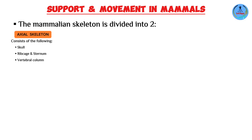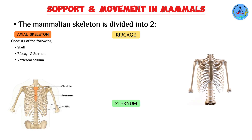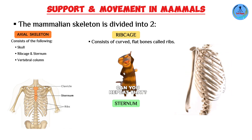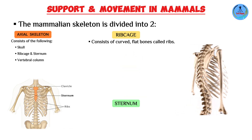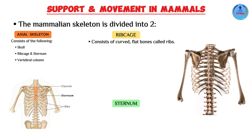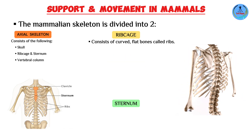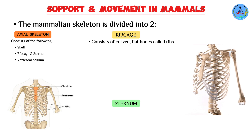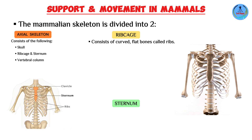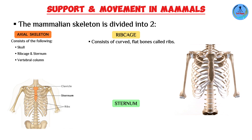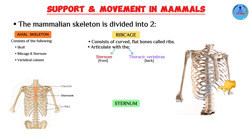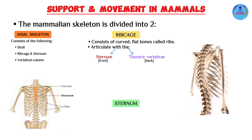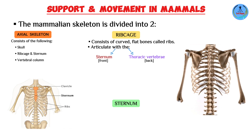Moving on to the next part of the axial skeleton — the rib cage and the sternum. In humans we have 12 pairs of ribs, totaling 24. Interestingly, some people are born with an extra rib or even with missing ribs without any health problems. The ribs articulate with other bones at the front and back: at the front they are joined to the sternum, and at the back they articulate with the thoracic vertebrae, found in the upper back.